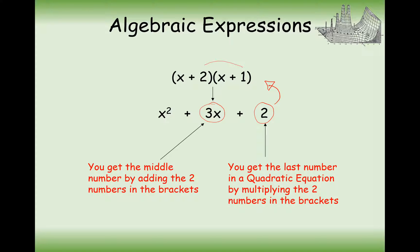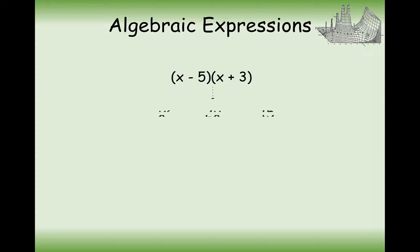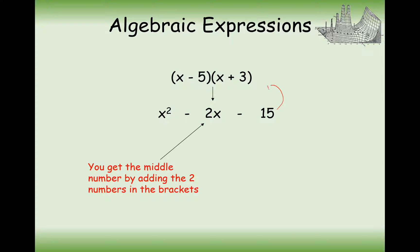It's really important that we get these two values right at the back of our brackets — this is the problem we're going to face. So if it's x minus 5 and x plus 3, we're going to get this as our expanded bracket. We're going to need to add these two numbers to make minus 2x, and we're going to need to times these two numbers to make minus 15.